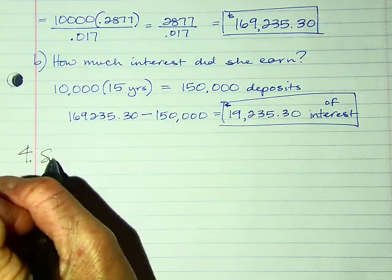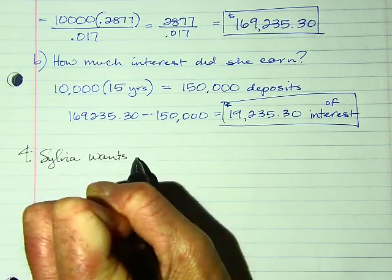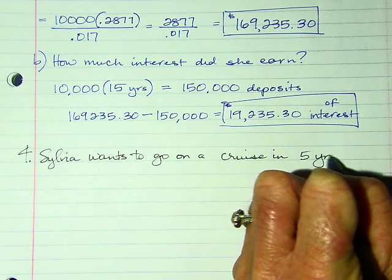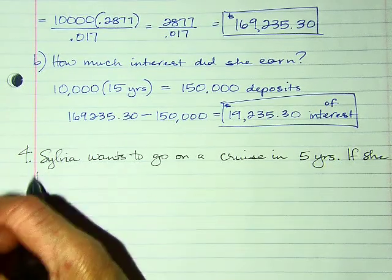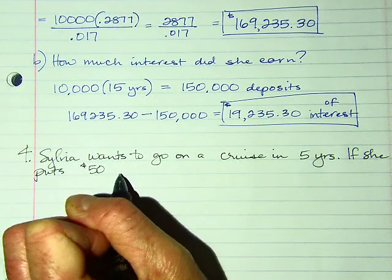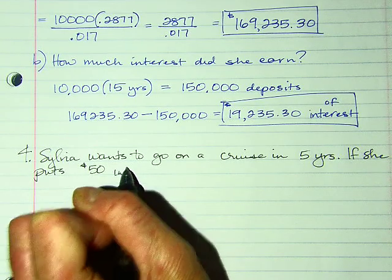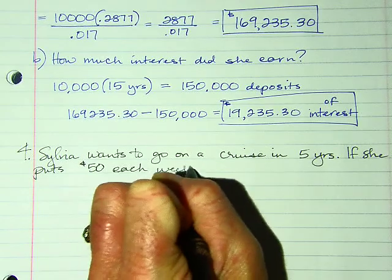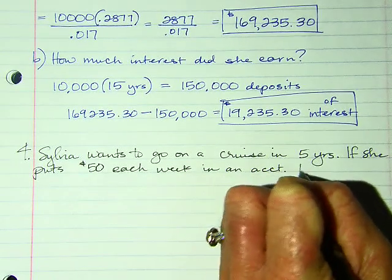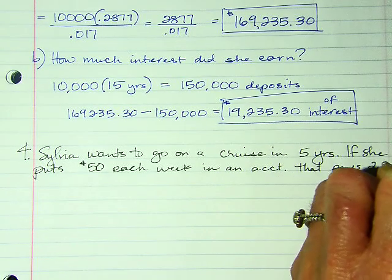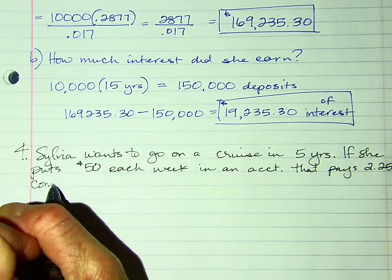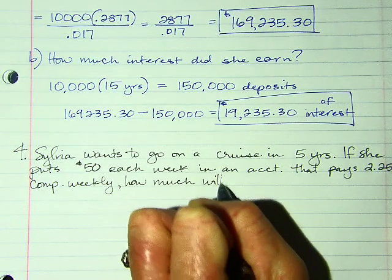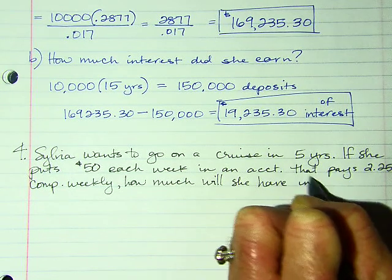Number four: Sylvia wants to go on a cruise in five years. If she puts $50 each week into an account that pays 2.25% compounded weekly, how much will she have in five years?